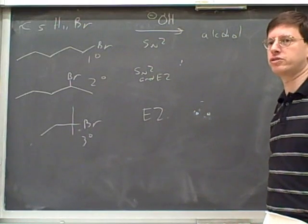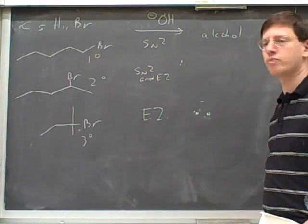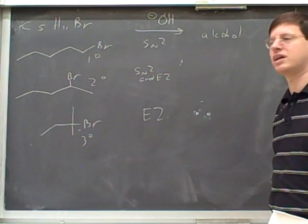And if we do an E2, what type of functional group are we going to end up with? An alcohol. What's the name of that functional group? An alkene. An alkene.